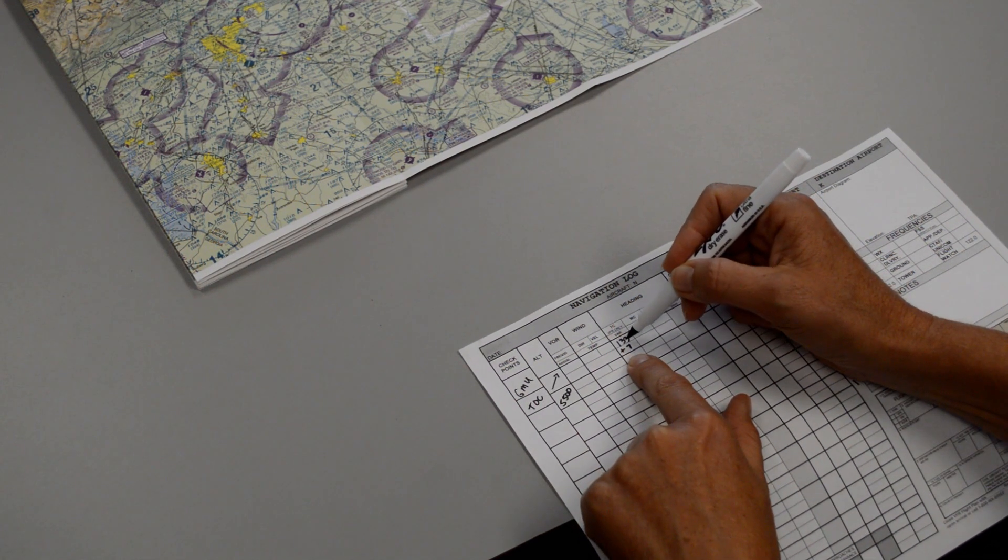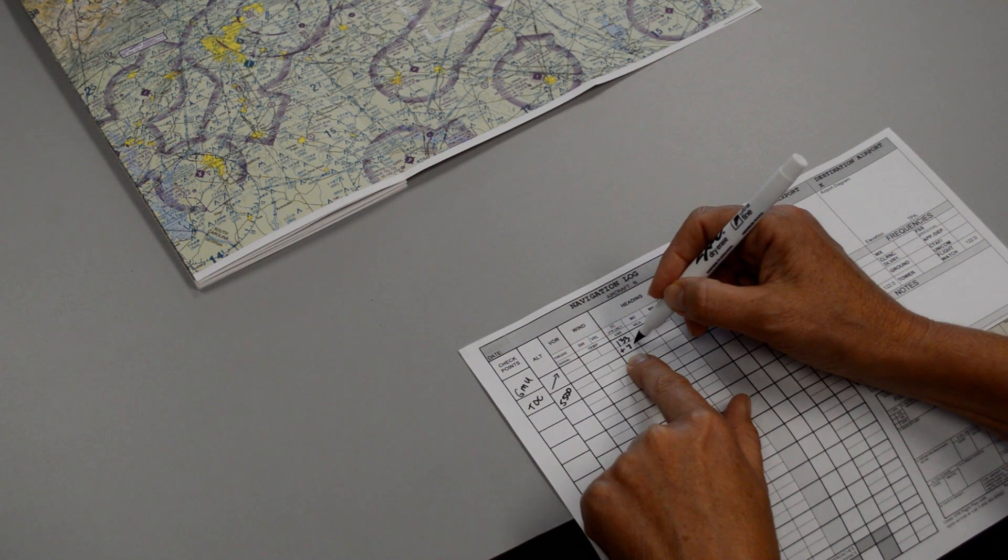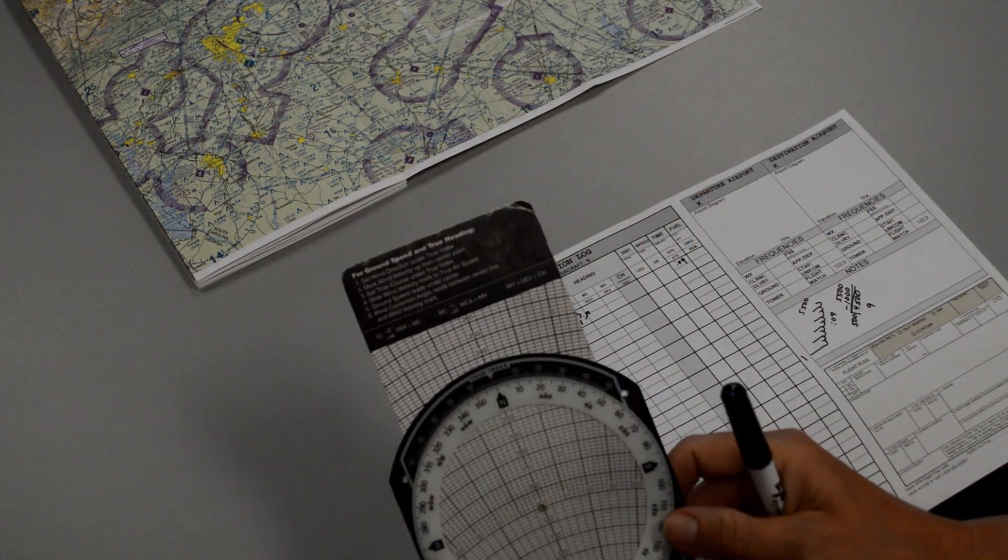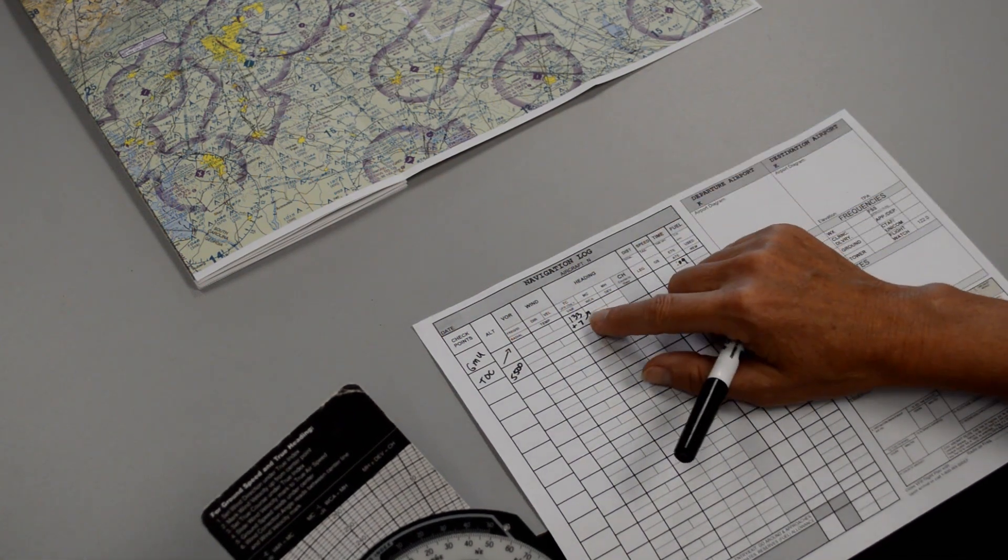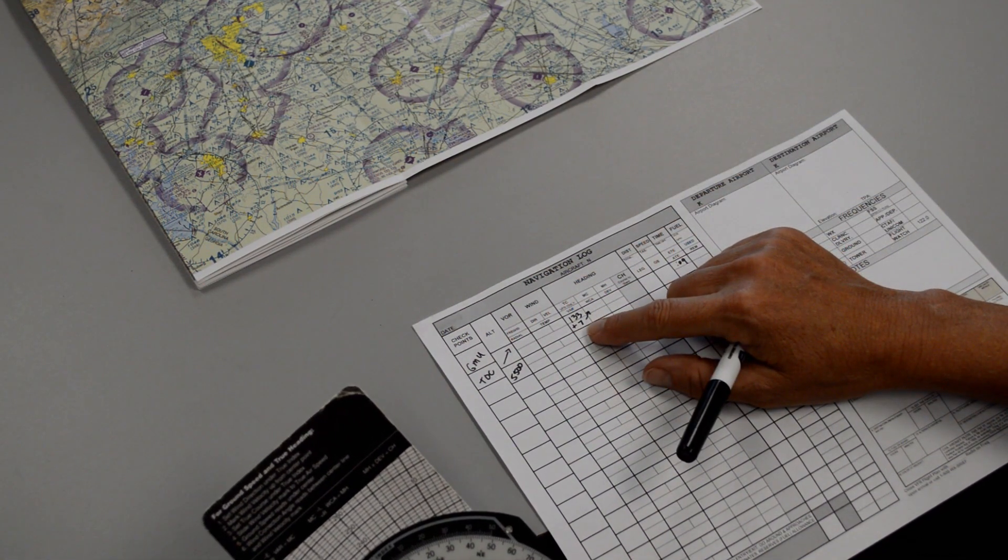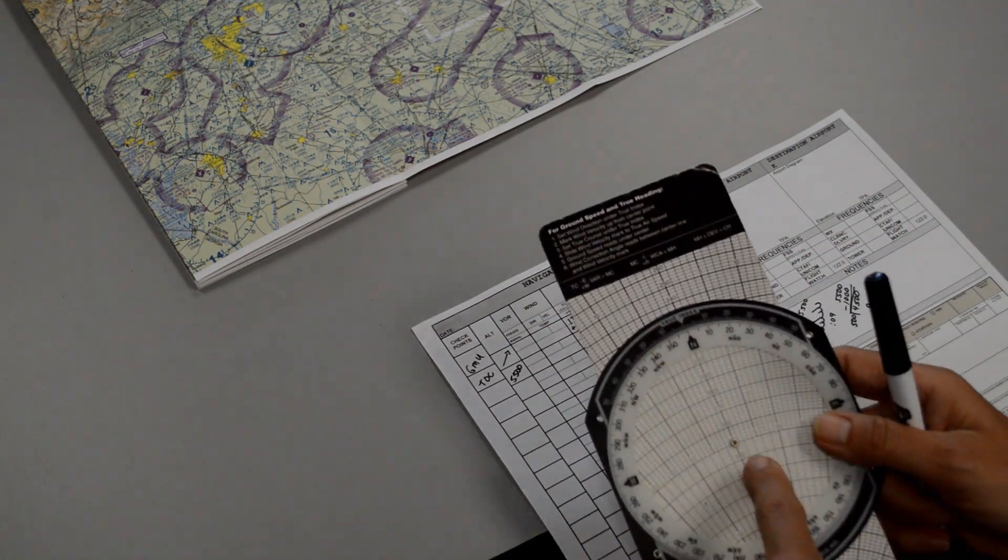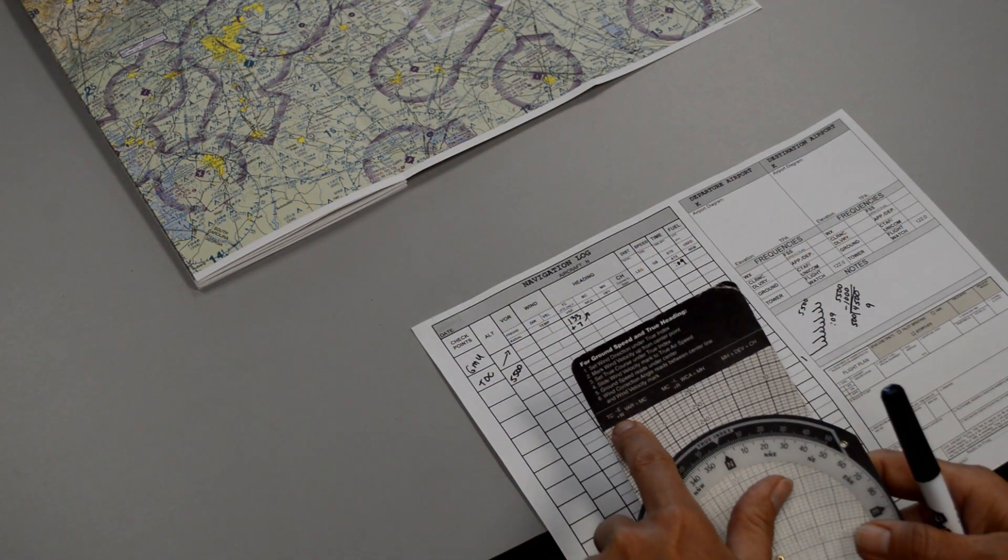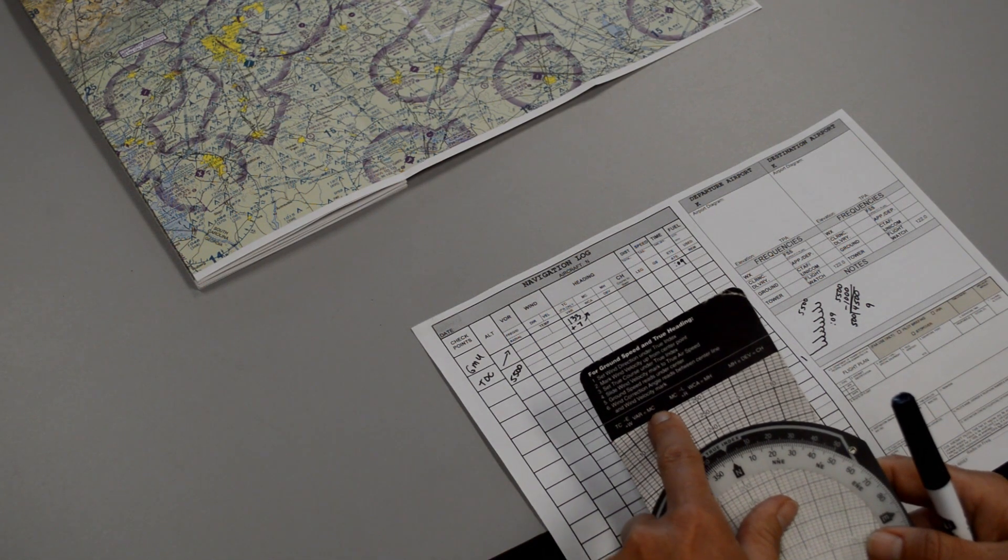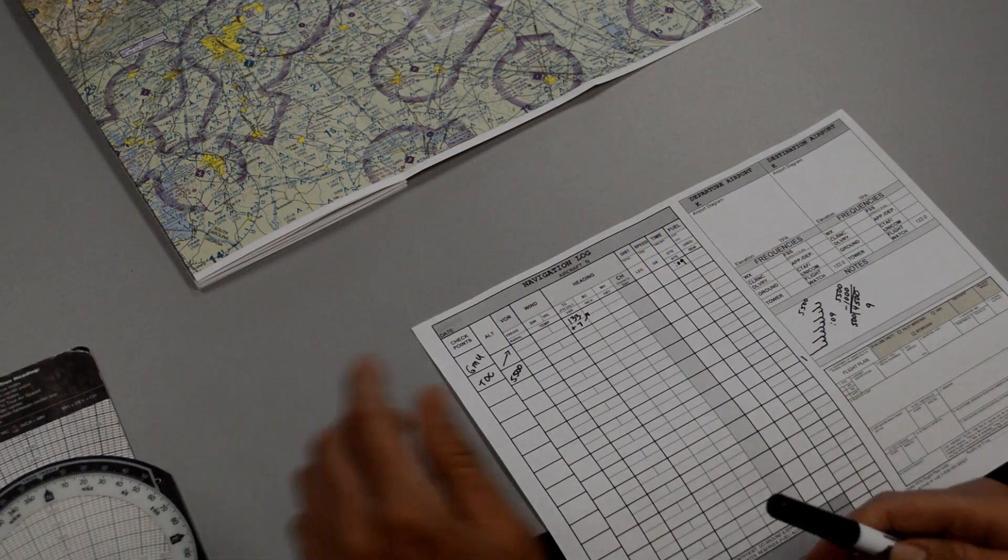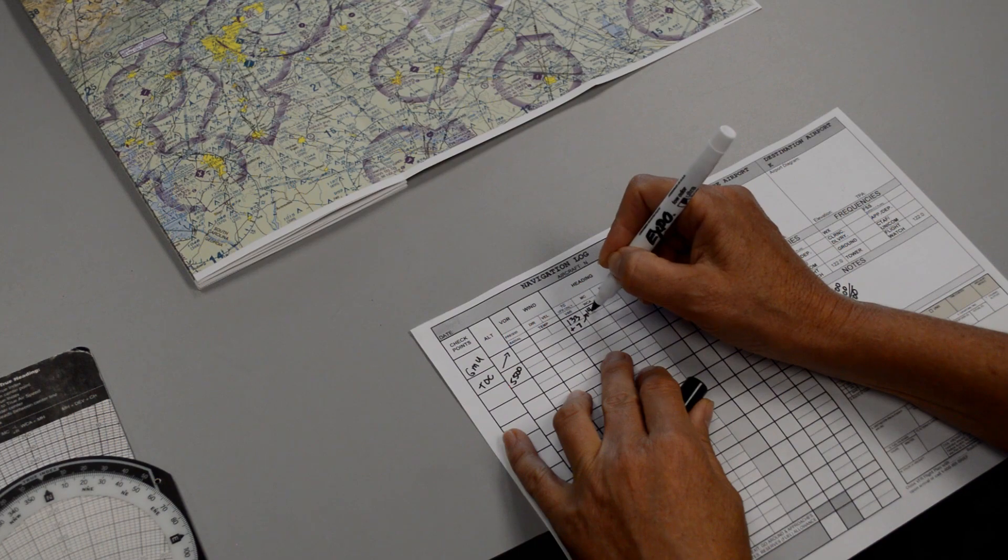What that does is it converts my true course to magnetic course. So my new answer goes up here. You may wonder, how did I know to add the 7? Well, if it's west, if the isogonic line shows west, I add it. And if it's east, I subtract it. Now if I forget, there's a little formula at the top of my E6B that shows me to add west or subtract east in order to correct my true course to magnetic course. So now my actual magnetic course is going to be 140.